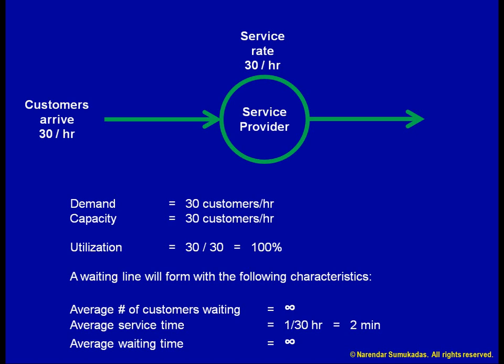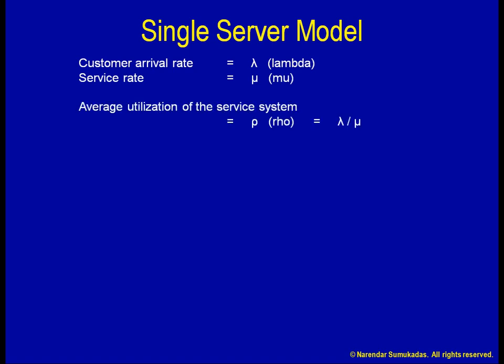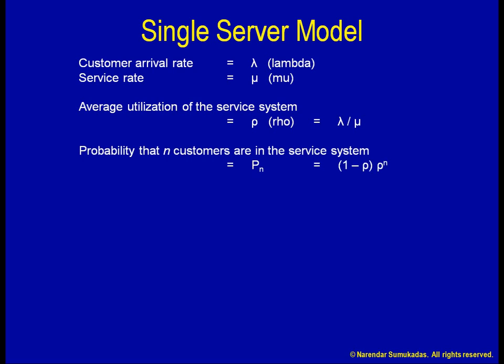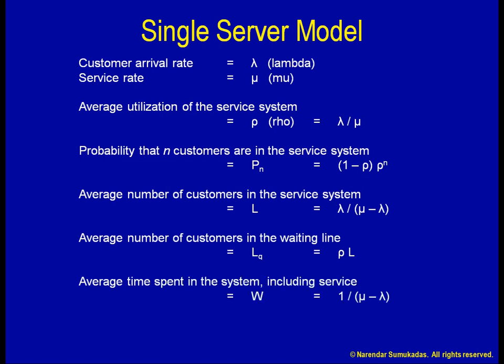There are some simple mathematical models that can mimic the behavior of real-life waiting lines. Applying these models, if we simply know the demand and capacity, we can calculate the various characteristics of the waiting line system. One such model is the single-server model, which applies to the system we are analyzing. The customer arrival rate is denoted by lambda, and the service rate is denoted by mu. Using this information, we can calculate several characteristics such as the utilization, the probability that there are n customers in the system, the average number of customers in the system L (which includes the person at the counter plus those waiting in line, or L subscript Q), the average time spent in the system W (which includes time at the counter plus time waiting in line, or W subscript Q).